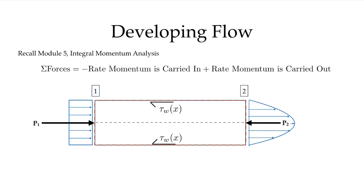Let's think about the developing flow region and recall the integral momentum analysis. Drawing the control volume in red, we add the forces acting on it. At section one, where flow enters the pipe, we have pressure P1 acting on the control volume. At the end of the developing flow region, we have a fully developed profile with no inviscid core, and a smaller pressure P2 acting in that direction. We also have wall shear stresses acting on the surface of this control volume. We can evaluate this to understand how the pressure is changing during the developing flow region.